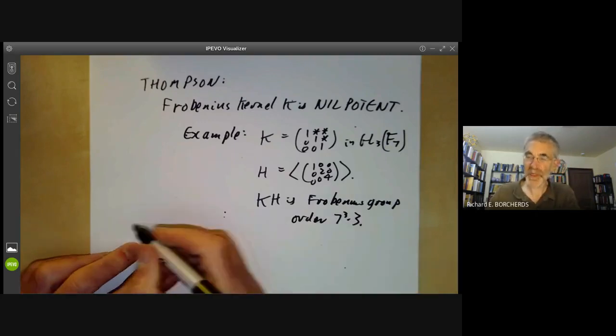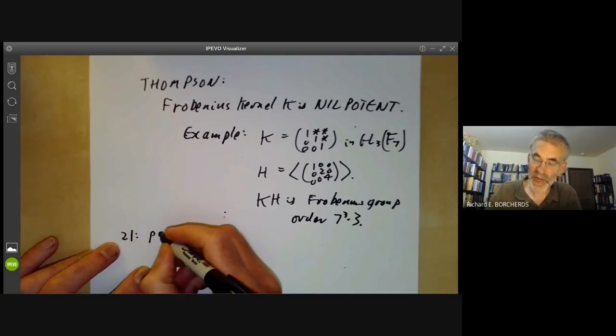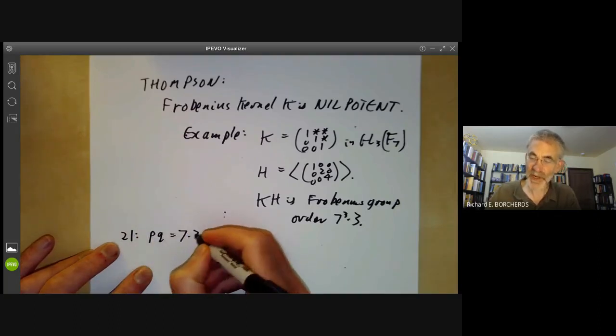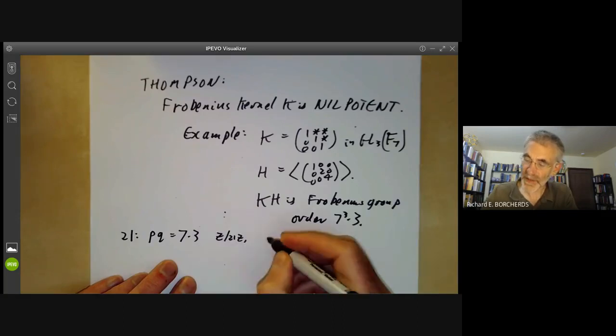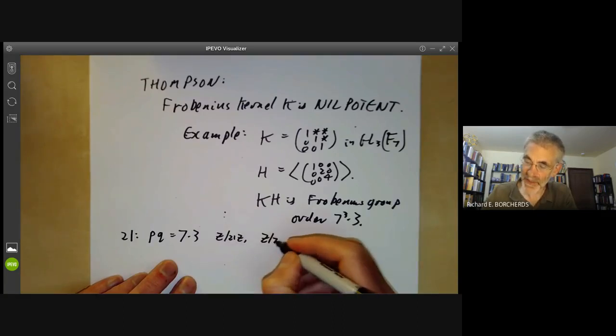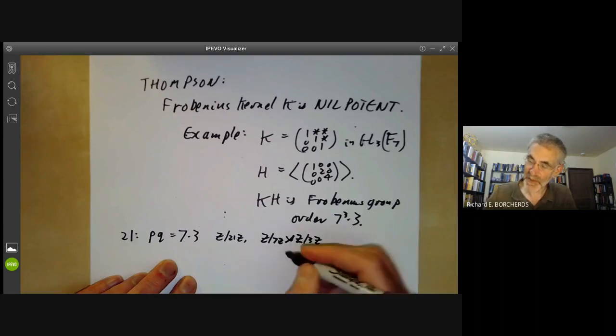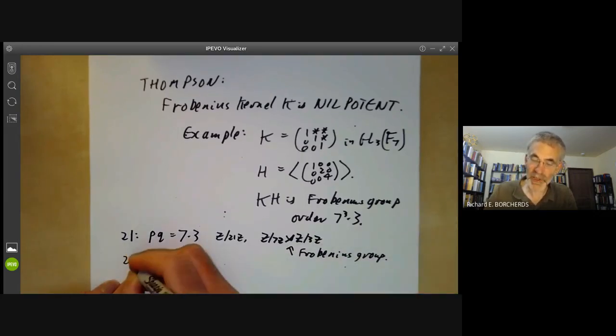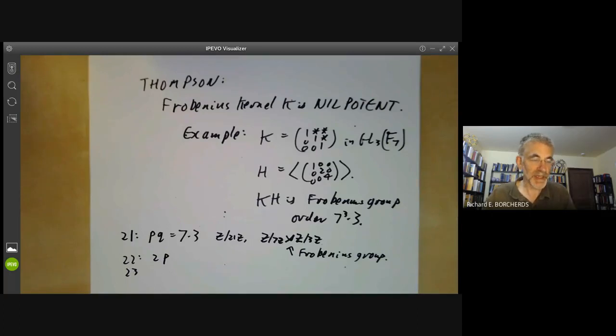So we'll finish off just by doing groups of order 21, 22 and 23. So order 21, these groups are of order pq of 7 times 3. And we saw earlier that there are just two possibilities. One is the cyclic group of order 21. And the other is a semi-direct product Z/7Z semi-direct product Z/3Z. And the only reason for mentioning it in this lecture is this happens to be another Frobenius group. As you can see, order 22, there's nothing interesting. This is of the form 2p, so it's either dihedral or cyclic. Order 23 is prime, so all groups are cyclic. So that leads us on to groups of order 24, which will be the topic of the next lecture.